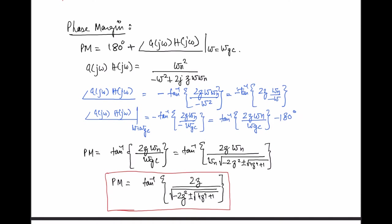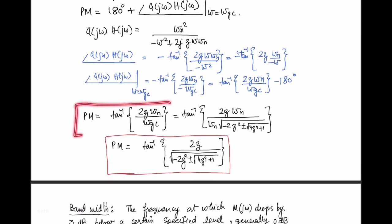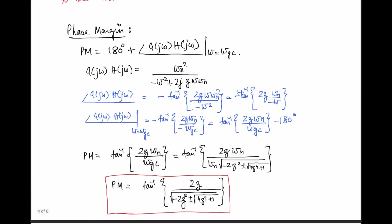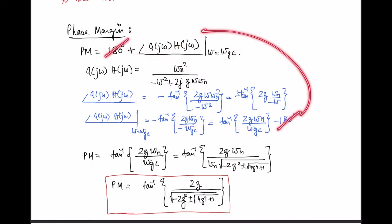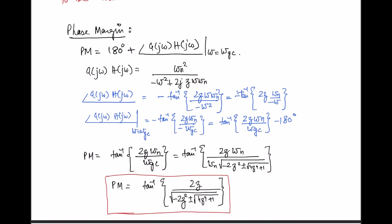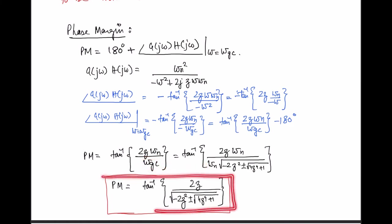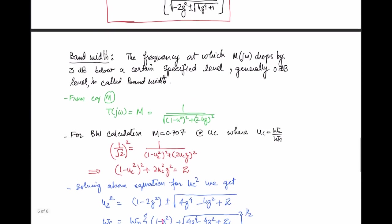Because of the negative sign in the phase expression, subtracting -180° introduces a positive sign, and the +180° and -180° cancel. The phase margin is therefore given directly by the tangent inverse expression evaluated at ωgc. Using the derived expression for ωgc, the phase margin of the second order system can be represented in closed form.